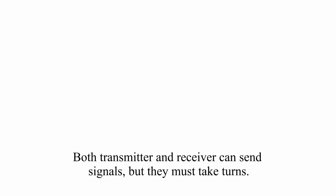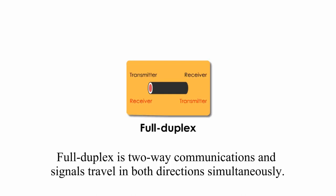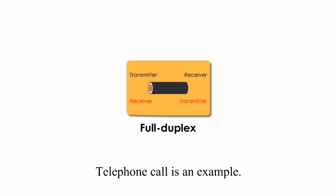Full duplex is two-way communications, and signals travel in both directions simultaneously. Telephone call is an example.